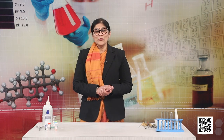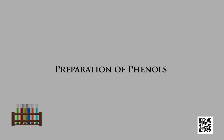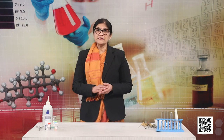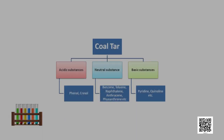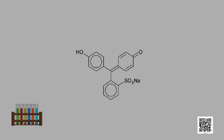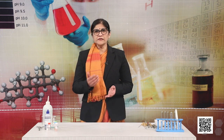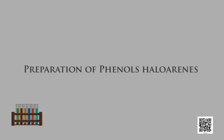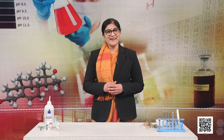Phenols are also known as carbolic acids, because they were first isolated in the early 19th century from coal tar. Nowadays, phenol is commercially produced synthetically. In the laboratory, phenols are prepared from benzene derivatives. The first method is from haloarenes — chlorobenzene is fused with NaOH at 623 K and 320 atm pressure, and phenol is obtained by acidification of the sodium phenoxide produced. We have studied this in the chapter on alkyl and aryl halides.